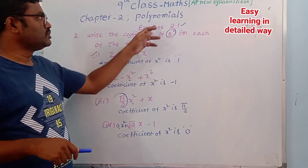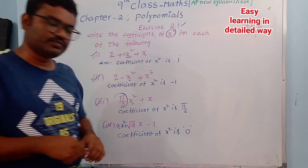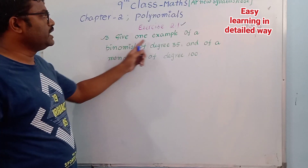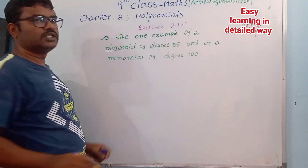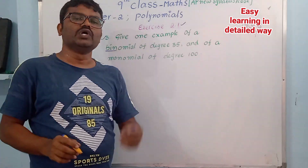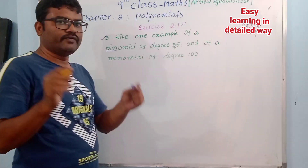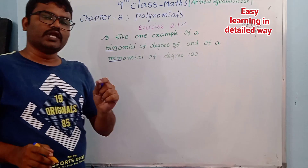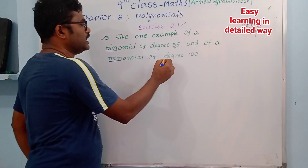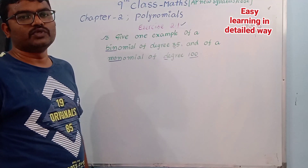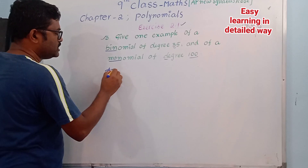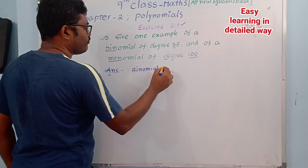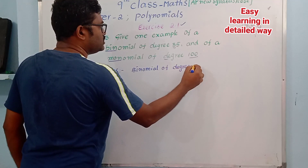Now let's see question number 3 of exercise 2.1, chapter 2, 9th class. Give one example of a binomial of degree 35 and a monomial of degree 100. A binomial is a polynomial consisting of two terms. A monomial is a polynomial consisting of only one term.